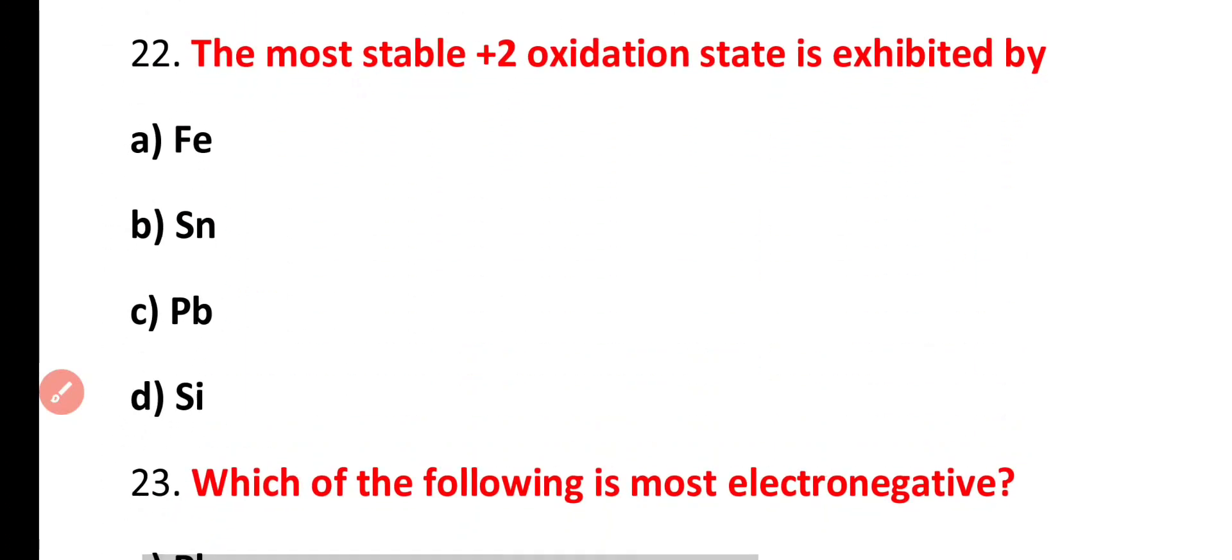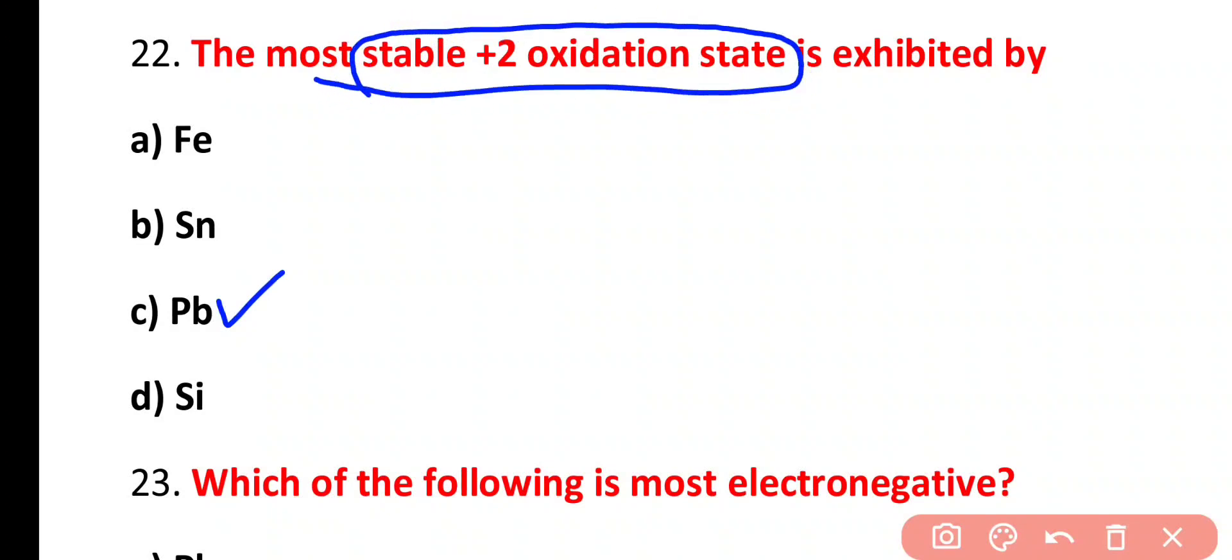Question 22. Most stable positive 2 oxidation state is exhibited by iron, tin, lead or silicon. Correct answer is option C. Lead shows most stable plus 2 oxidation state.